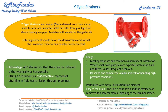The filtering element should be on the downstream side — that is, flow is towards this side — so that debris are collected in this portion. An advantage of Y-type strainers is that they can be installed in either a horizontal or vertical position, giving us very good flexibility in our piping layout.